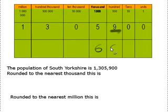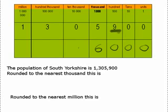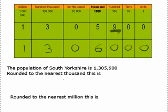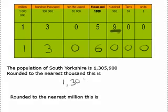So we've got zero in the hundreds and the tens and the units. The other numbers in the figure remain the same. So there's zero ten thousands, there are three hundred thousands, and there is one million. So we can say that this number to the nearest thousand is one million, 306,000.